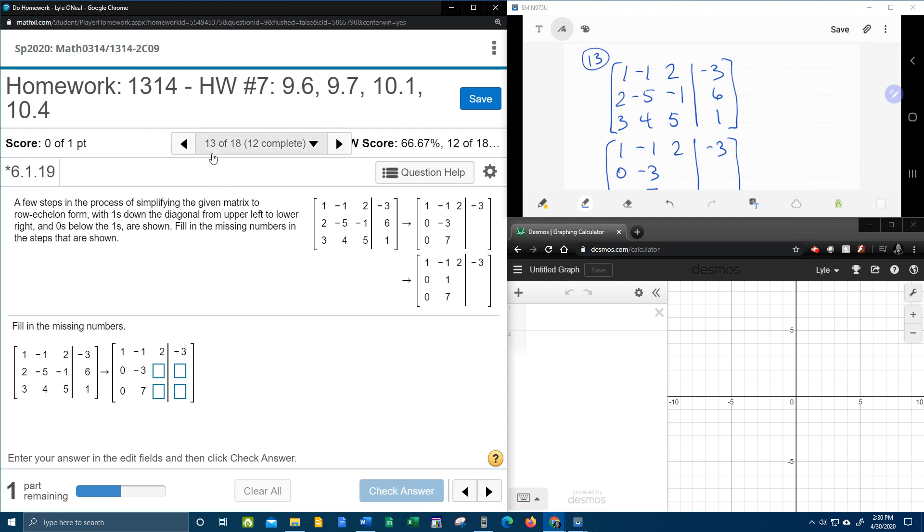Alright, here we go. Question number 13 in our college algebra homework number 7 in MyLabMath. It says a few steps in the process of simplifying the given matrix to row echelon form, with ones down the diagonal from upper left to lower right and zeros below the ones. That's kind of hard to maybe get a mental picture of. Fill in the missing numbers in the steps that are shown.